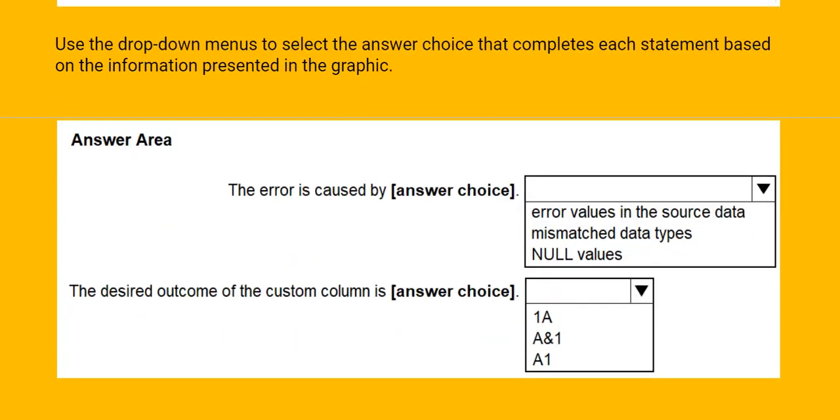See this one. The error is caused by, the options are: error values in the source data, mismatched data types, null values. The desired outcome of the custom column is: 1A, A and 1, A1.